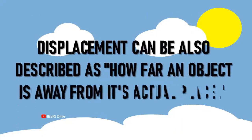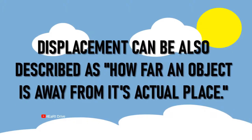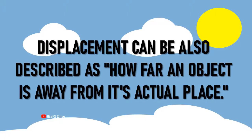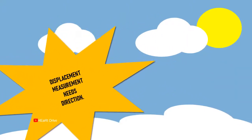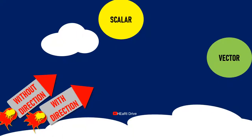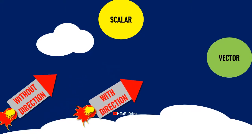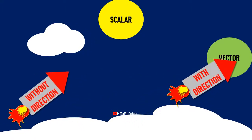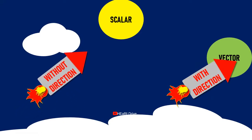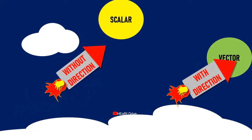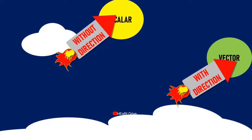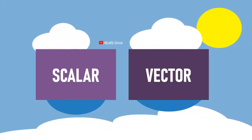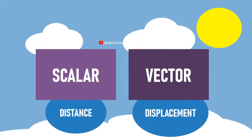Displacement can also be described as how far an object is from its actual place. In displacement measurement, direction must be considered. Any quantity measured considering direction is called a vector quantity, and any quantity measured without considering direction is called a scalar quantity. So displacement is a vector quantity and distance is a scalar quantity.